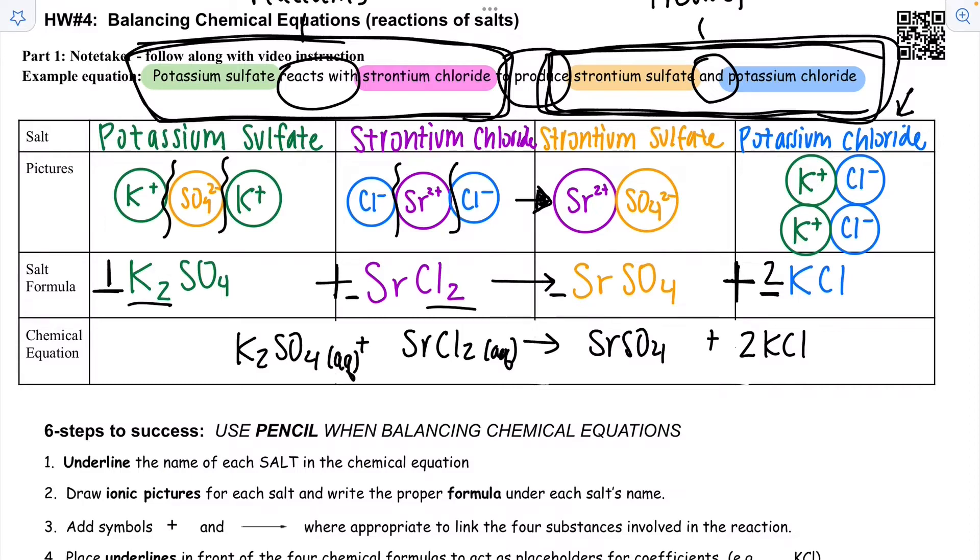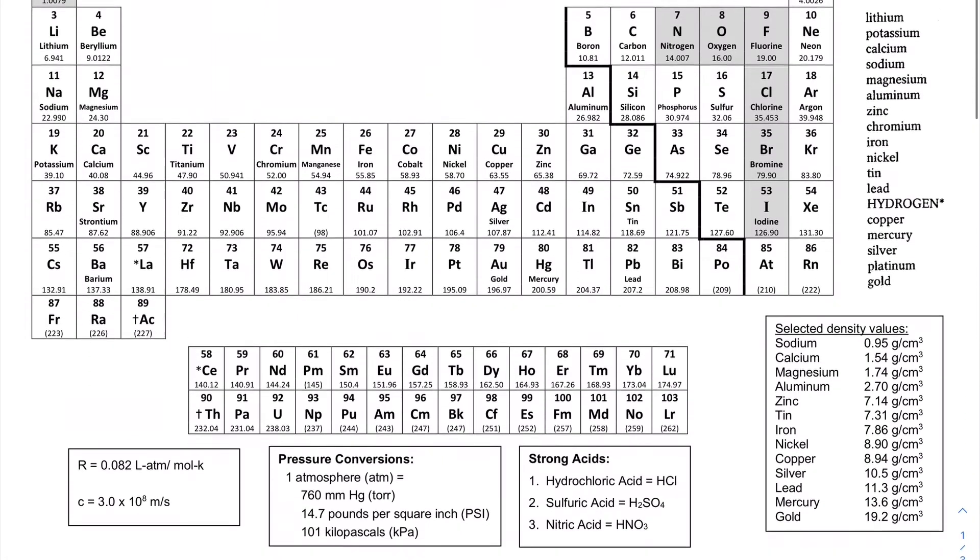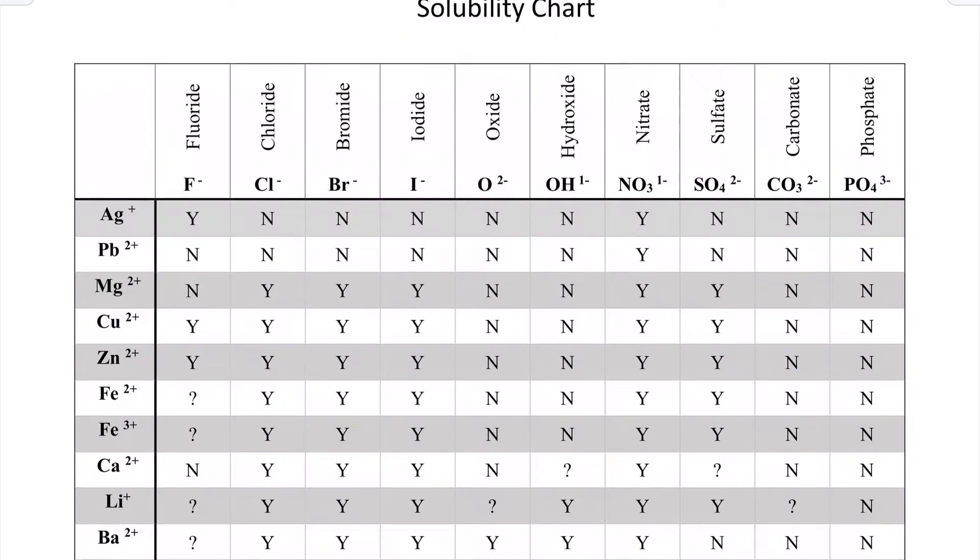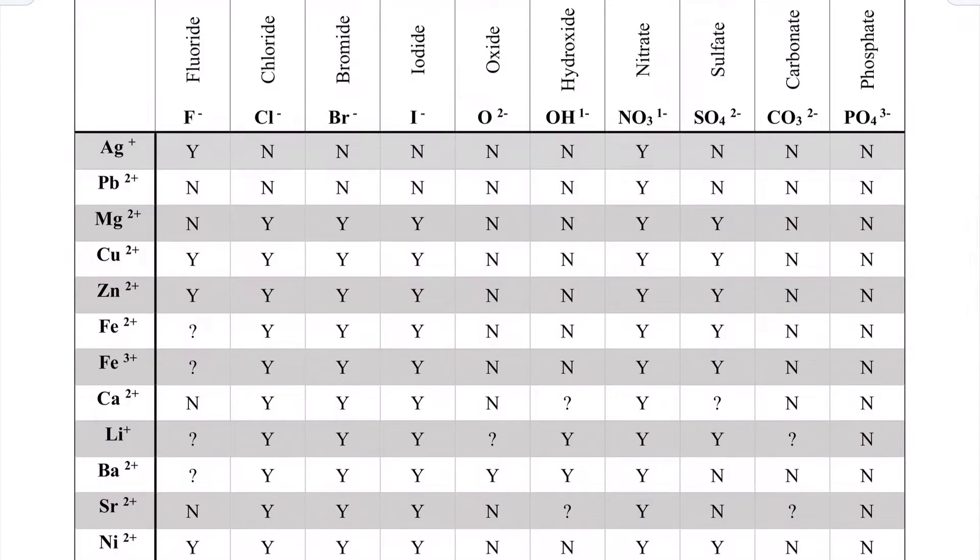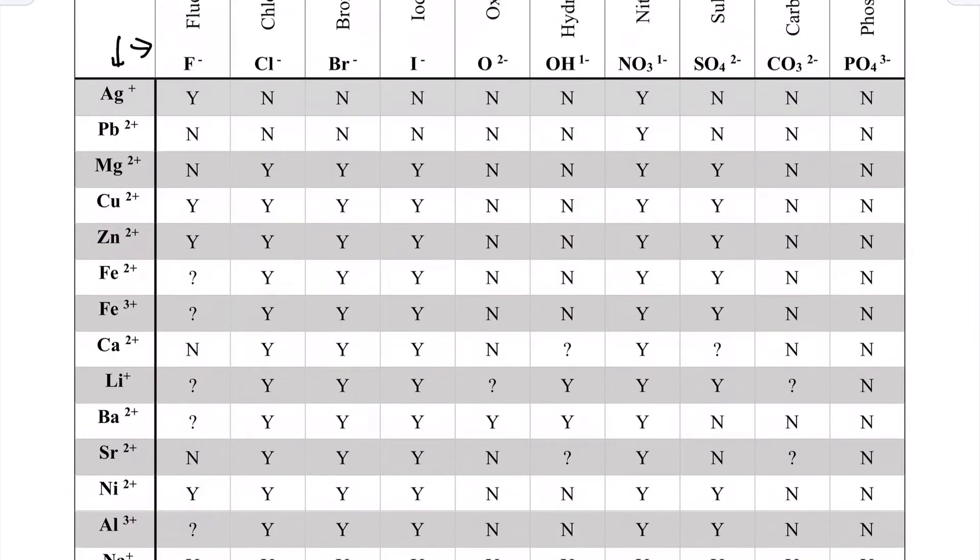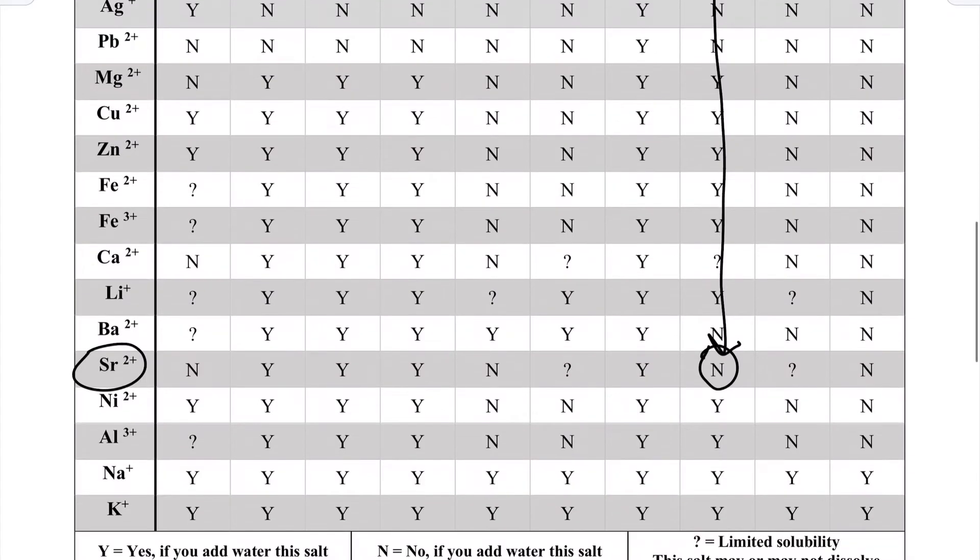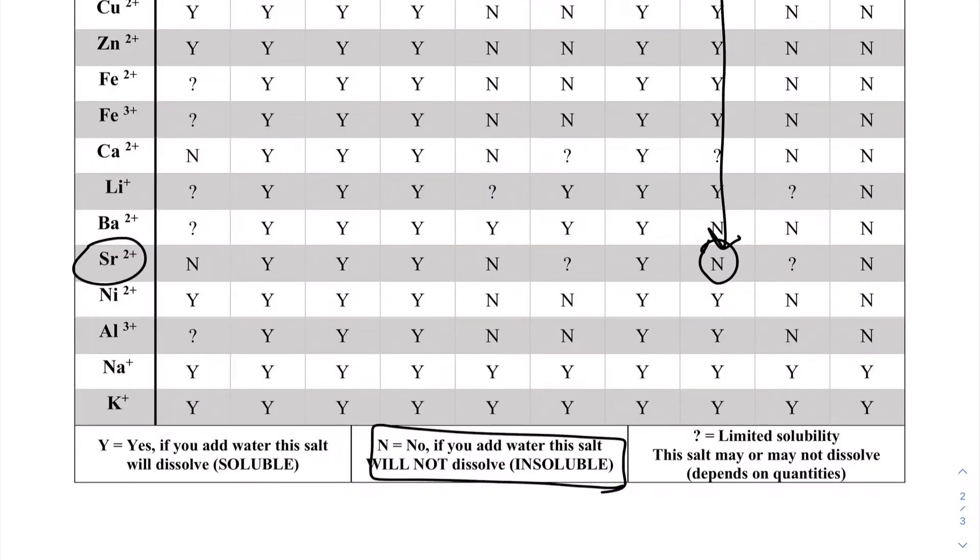And then we come to our products and in order to know what the solubility of our products are, we have to look at the solubility chart on the back of your periodic table. Here we have your periodic table and on the back you'll find the solubility chart. The way you use this is to find the cation, which is the positive ion, and the anion that matches it. Find where they intersect and then decipher the letter that is in there. We are first looking for strontium sulfate. So I find strontium and I find sulfate and I see the letter is N. And I go down to my key down here and N means no, if you add water, it will not dissolve. It is insoluble.